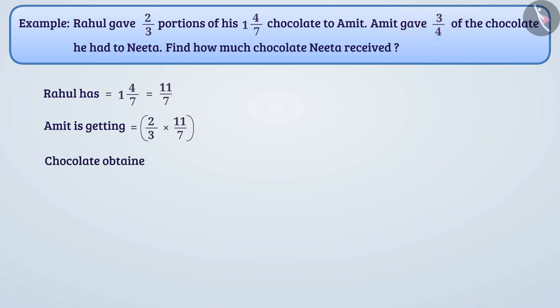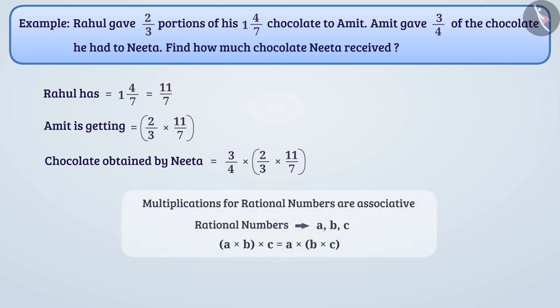So chocolate obtained by Neeta is 3/4 × 2/3 × 11/7. Let's solve it. Multiplication for rational numbers are associative. So we can group here as follows.